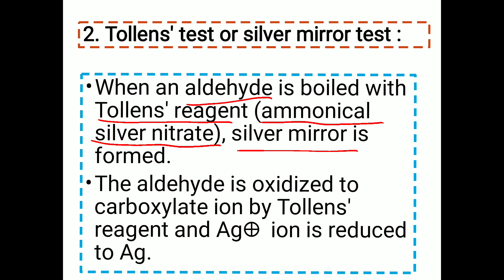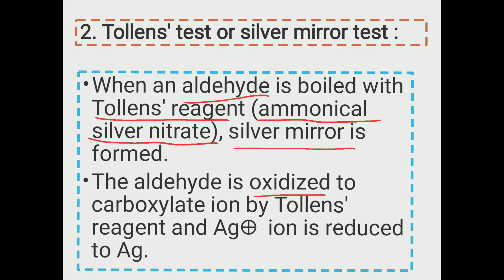In the Tollens test, the aldehyde is oxidized to a carboxylate ion by the Tollens reagent, while the silver ion (Ag⁺) in the reagent is reduced to metallic silver (Ag). The general reaction involves RCHO reacting with Tollens reagent (AgNO₃ + NH₃) under heating.